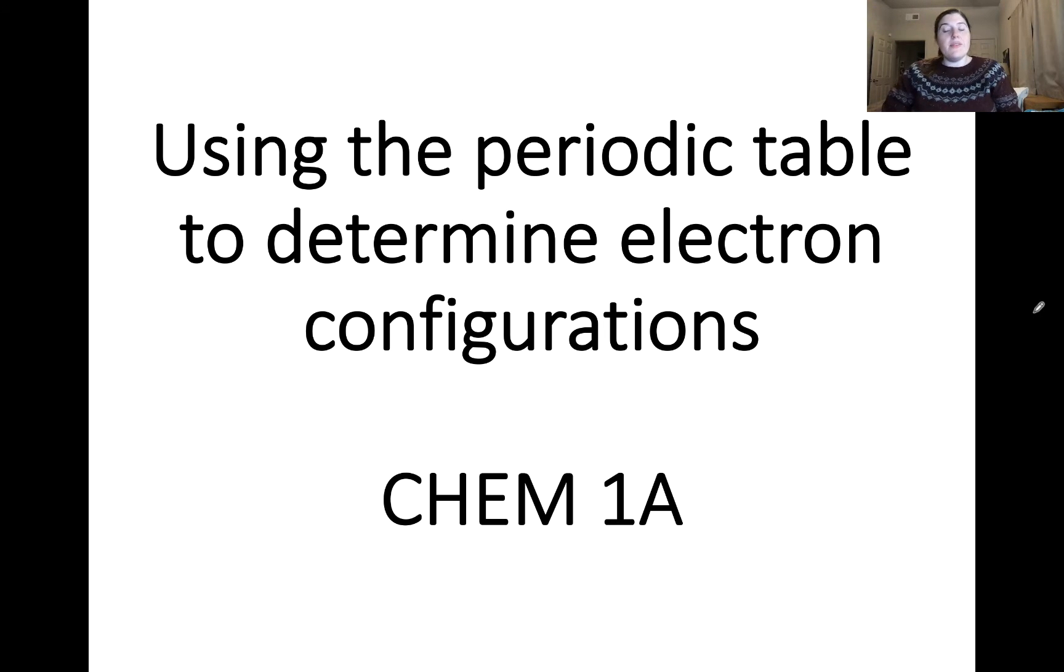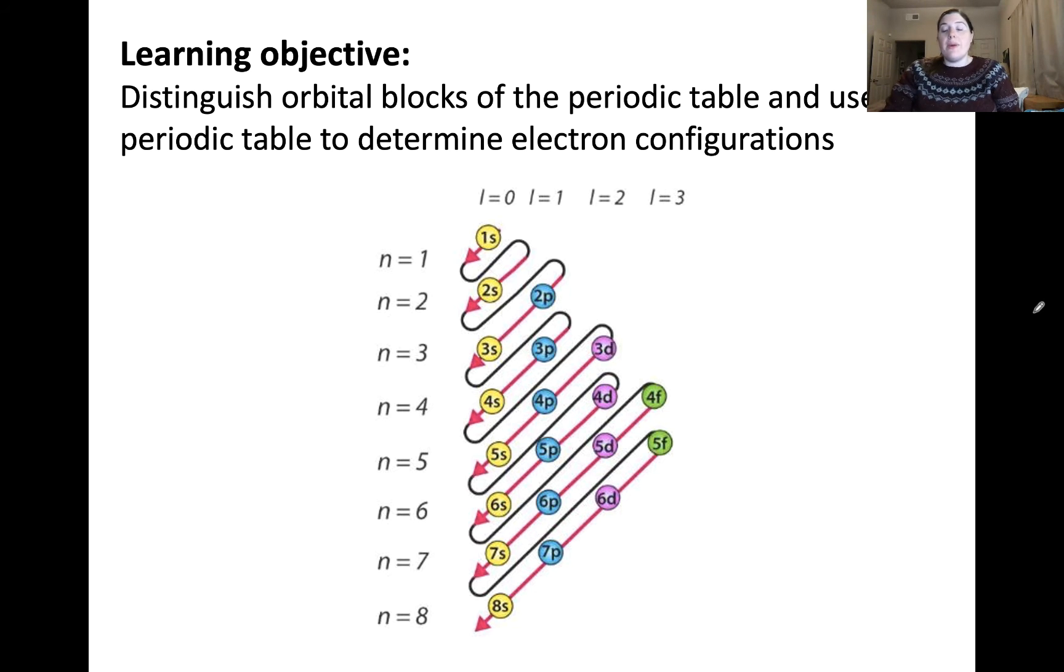Today we are going to talk about using the periodic table to determine ground state electron configurations. You may have seen a diagram similar to this in a previous video or maybe elsewhere. What this shows is the filling order for electrons in atoms, starting with the 1s orbital, going then to the 2s and the 2p and so on. Our goal today will be to use the periodic table to assist us when determining electron configurations of atoms.